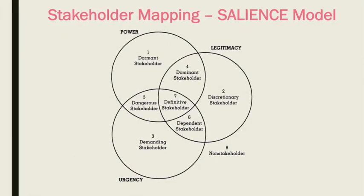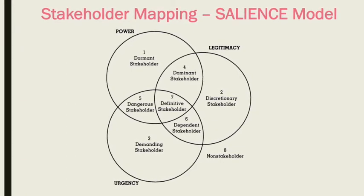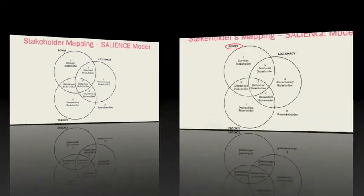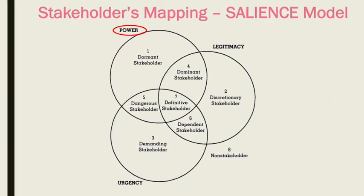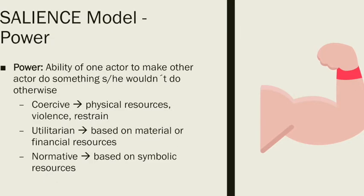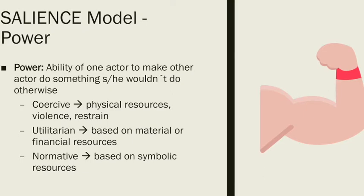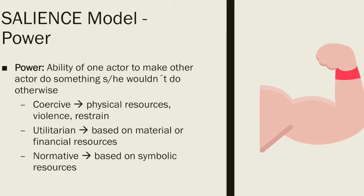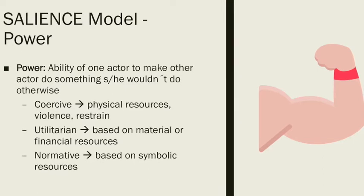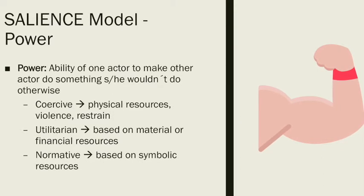The next step is to organize stakeholders based on three main characteristics: power, legitimacy, and urgency. By power, I mean that there are actors that have the ability to change a company's behavior. Some have long-standing power, such as shareholders, while others can have only temporary power — for instance, when deciding where to establish a facility, communities around those locations can have power at specific moments. Power can be conceived as the ability of one actor to make another actor do something she or he wouldn't do otherwise.